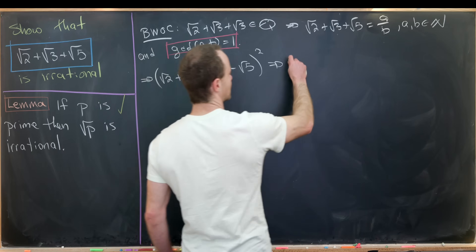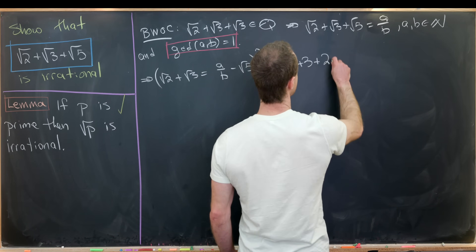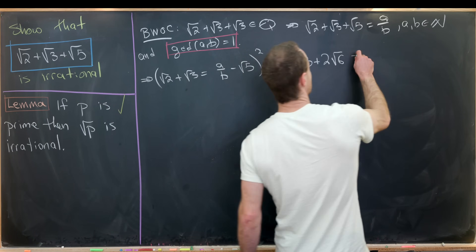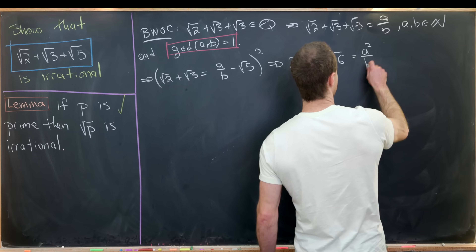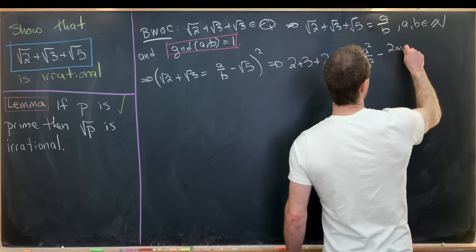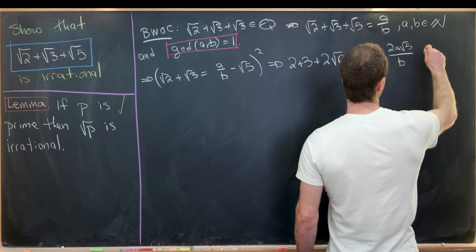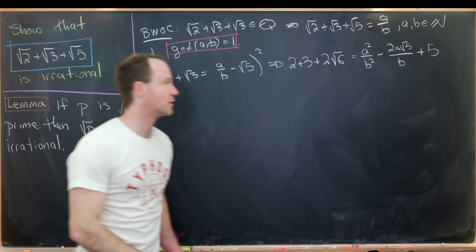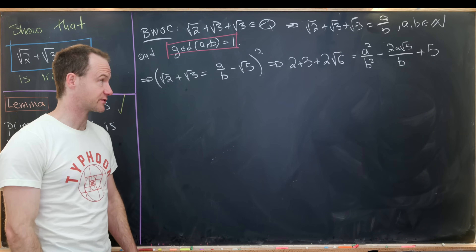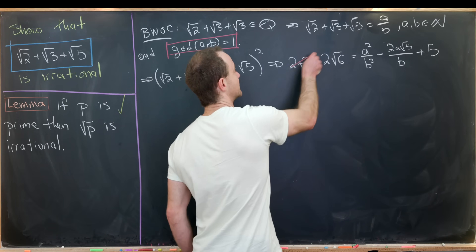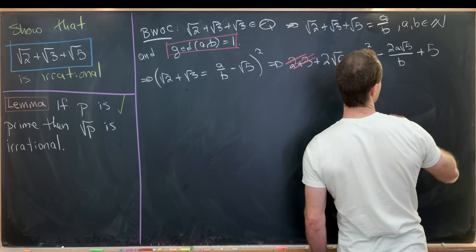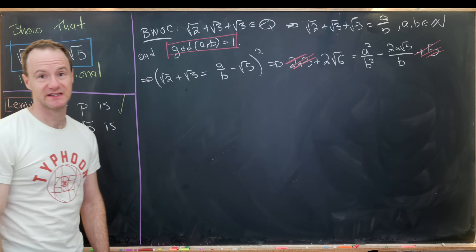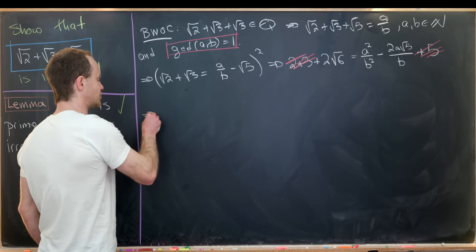Squaring both sides gives us 2 plus 3 plus 2 times the square root of 6 on the left. The right hand side squares to a squared over b squared minus 2a times the square root of 5 over b, plus 5. This is a nice consequence of the fact that 2, 3, and 5 are prime numbers and 2 plus 3 equals 5 — that means we can cancel the 2 plus 3 on the left with the 5 on the right. We're just left with 2 times the square root of 6 on the left, which gives us motivation to square again.